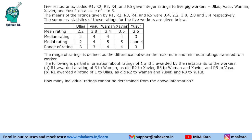Hello everyone, welcome to Aptitude Jab. This set from CAT 2023 slot 1 DILR says that there are 5 restaurants, R1 through R5.